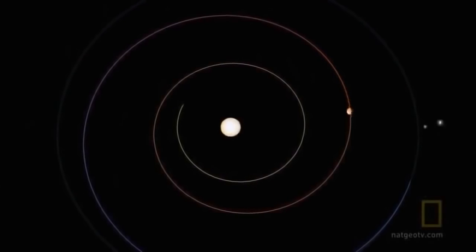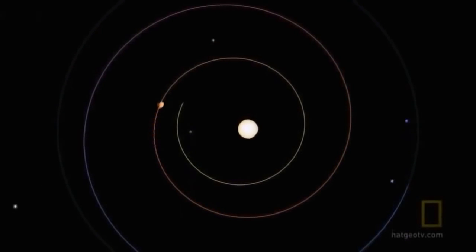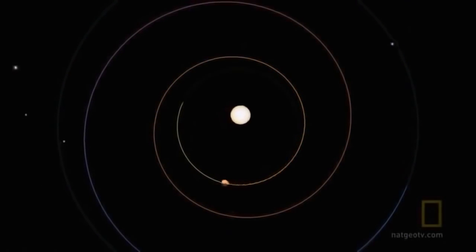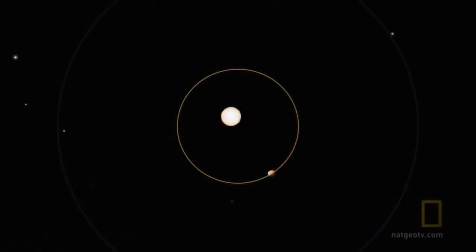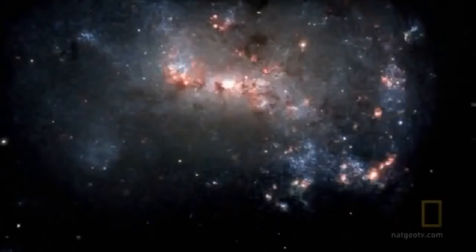The key to the puzzle is found in how planets are made. Planets are a by-product of star formation. When stars form, they have a disk of dust and debris around them, and out of that debris, planets form.